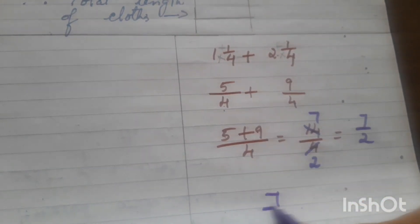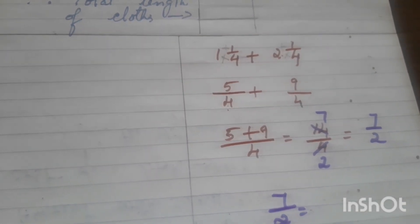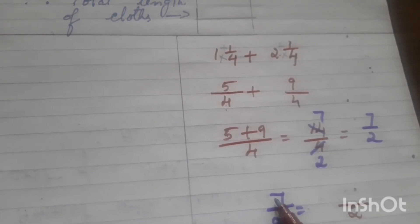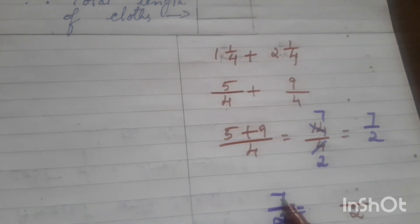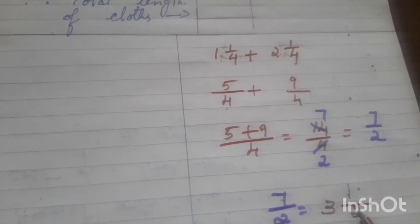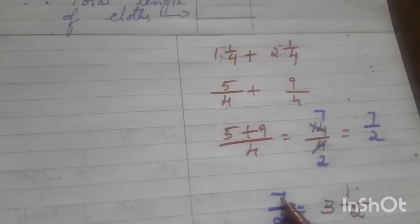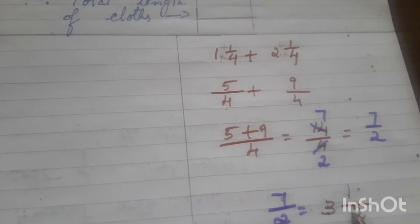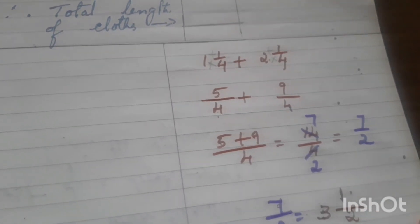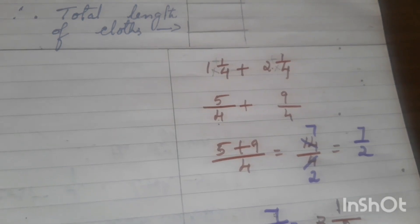Now convert 7 by 2 into a mixed fraction. Dividing 7 by 2: 2 times 3 is 6, which is nearer to 7. 6 plus 1 is 7. So the quotient is 3 and remainder is 1. So the answer is 3 and 1 by 2 meters.